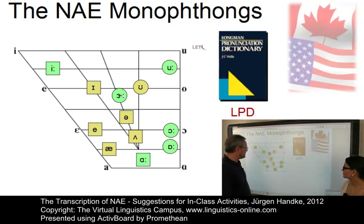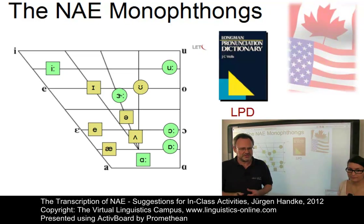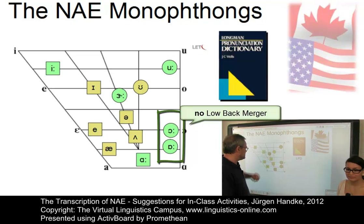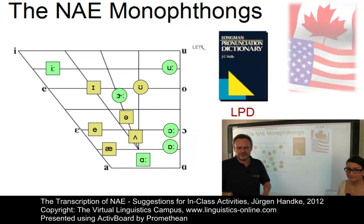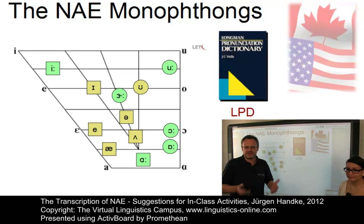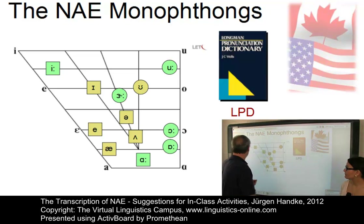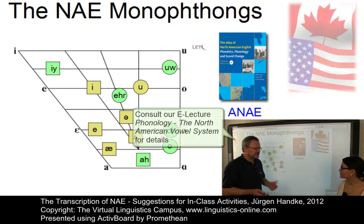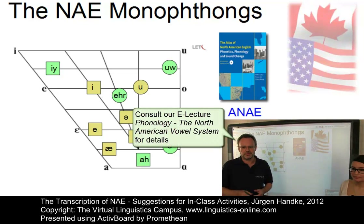Using this more traditional accent, here is the vowel chart of North American English with 17 vowels. We are in a slight degree of trouble: if you're a teacher at a German school, the LPD notation would be your transcription of American English, as it appears in German school vocabulary lists. If you're a linguist, you're likely to use the Atlas of North American English notation.